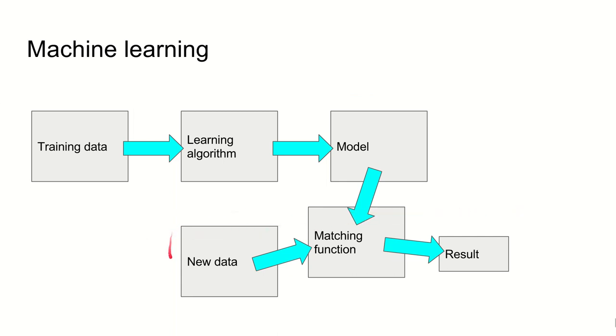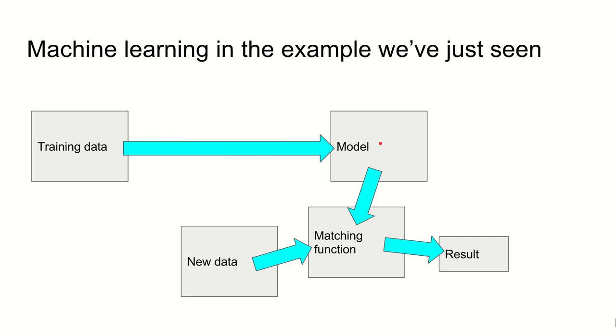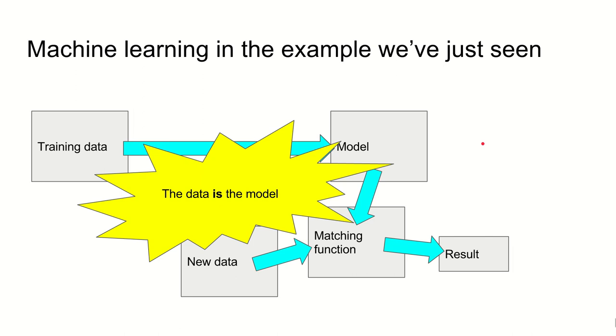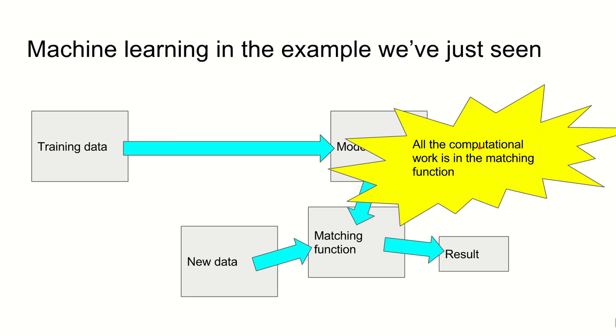Next, when we've got a new piece of data, so you've got a new instance that you want to apply your model to, you match that to the model that you've got. And by finding the closest one, you get a result. In the example we've just seen, in the nearest neighbour example, the training data is the model. So there isn't really much machine learning going on at all. And all of the computational work, all of the heavy lifting, is finding the closest one from the data that you've seen. So all of the computational work is in the matching function.